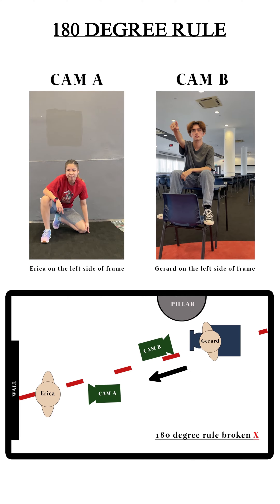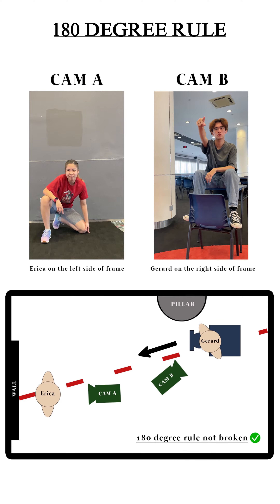In the 180 degree rule, there's an imaginary line drawn between two characters. To follow the rule, the camera has to stay on the same side of the line. This helps the audience understand where things are placed in the setting.